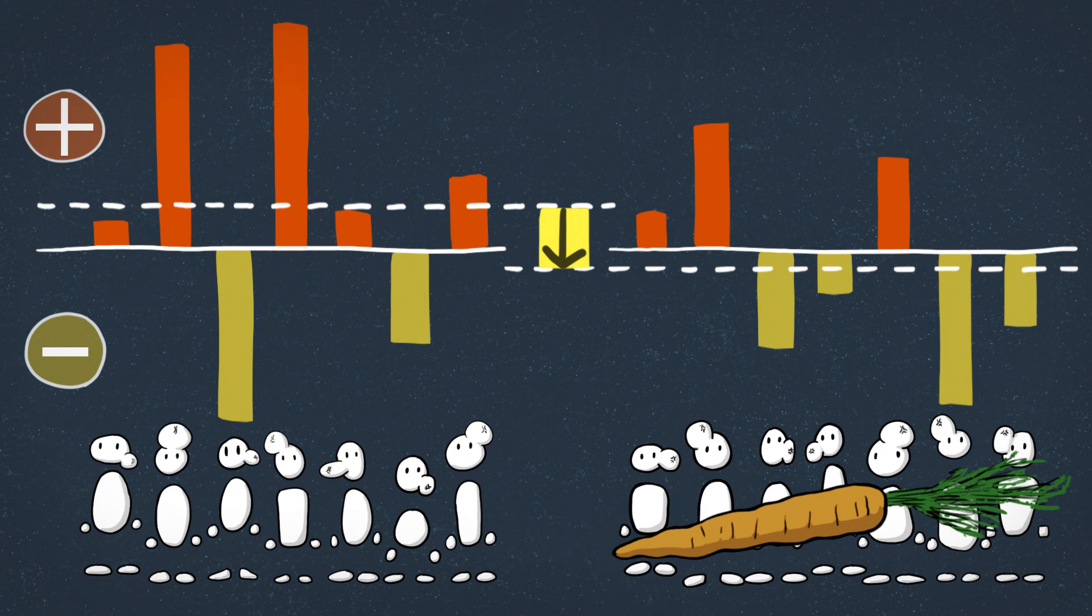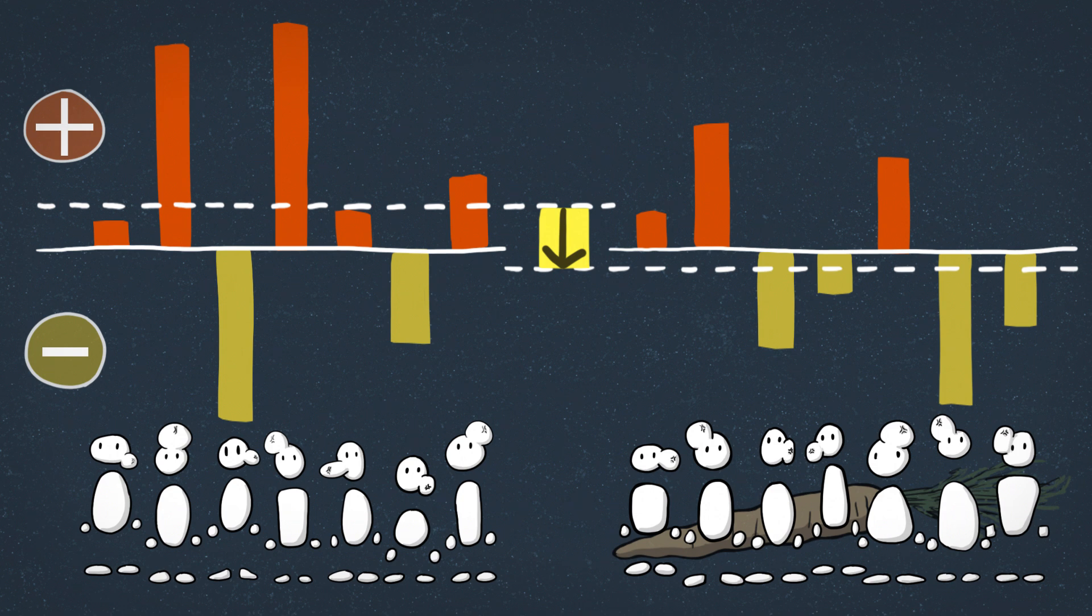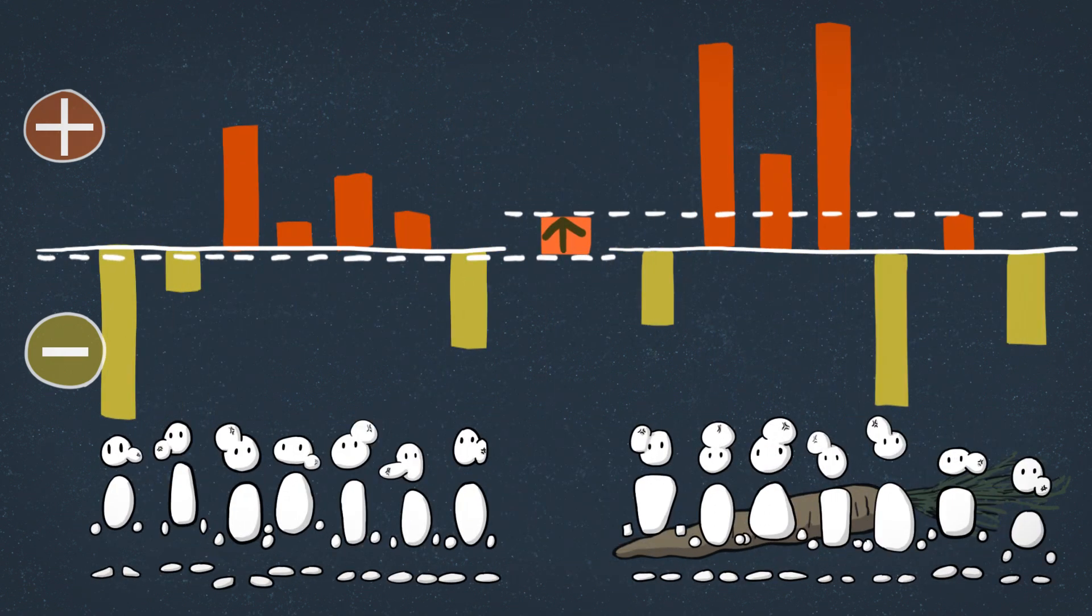Maybe. But it could also be the noise from all the other stuff. Maybe carrots did nothing, and all these people's lumps were going to shrink and grow for other reasons, and it was just the random way that we put them into the groups that created these results.